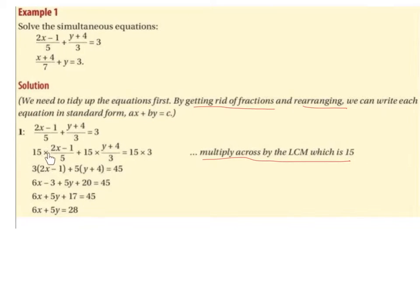Multiplying across: 15 times (2x minus 1) over 5 plus 15 times (y plus 4) over 3 equals 15 times 3. So 15 divided by 5 is 3, giving 3 multiplied by the numerator. And 15 divided by 3 is 5, giving 5 times the numerator. And 15 times 3 is 45. Expanding the brackets: 3 by 2x is 6x, 3 by minus 1 is minus 3, 5 by y is 5y, 5 by 4 is plus 20, all equal to 45.